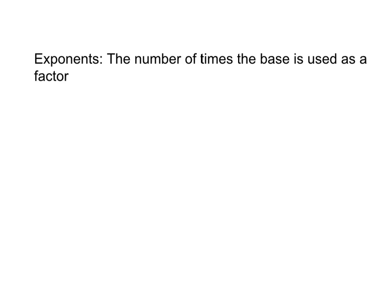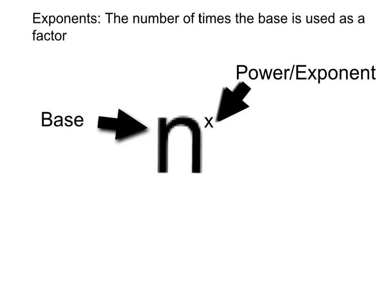Now, we need to know what is a base — what does that mean? Here we are. This is n to the x power, or n to the power of x. In this case, the n is the base, and the x is the power, or the exponent. So what this means is n multiplied times itself, x number of times.